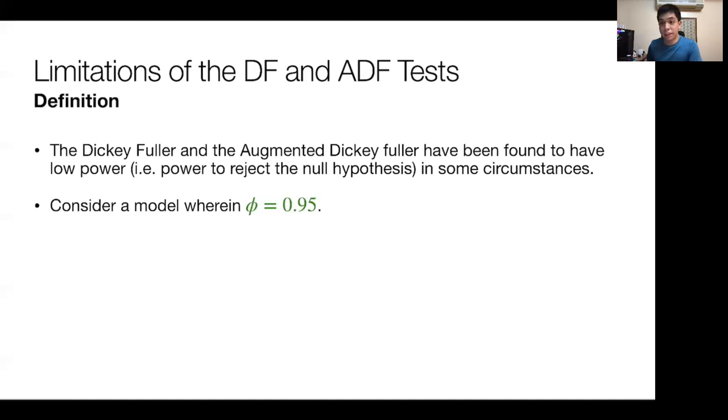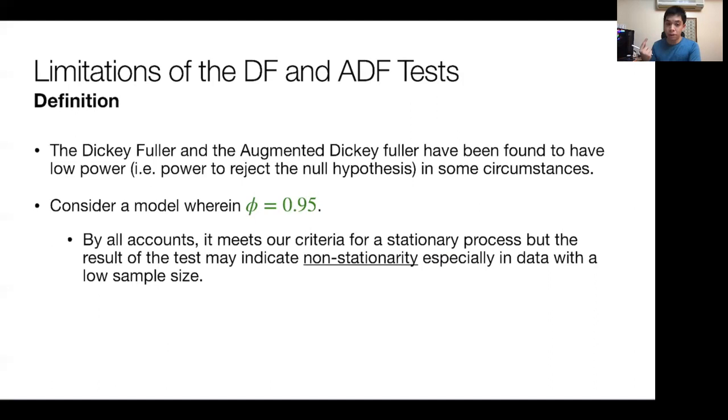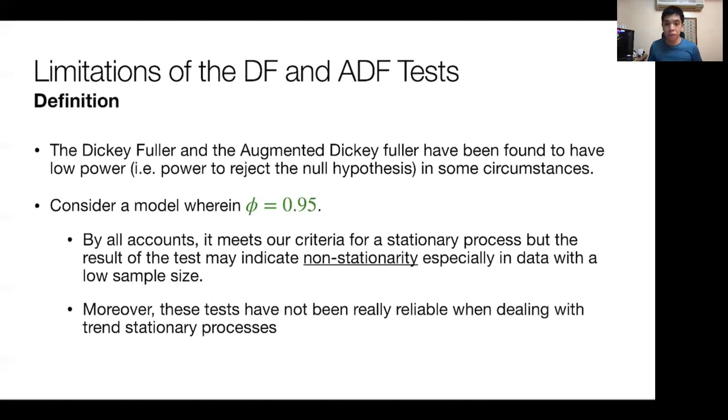The Dickey-Fuller and ADF tests have also been found to have low power. Its power to reject the null has been relatively low in some circumstances. For example, if you have a model where phi equals 0.95, it's nearly non-stationary but not quite. It's still stationary because it's less than one. By all accounts, it meets our criteria of a stationary process, but what may occur is the ADF test may indicate non-stationarity, especially if the time series under consideration is of a relatively low number of periods or relatively low sample size. Moreover, these tests have not been readily reliable when dealing with trend stationary processes.